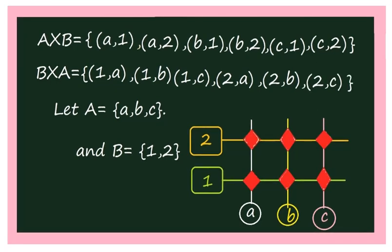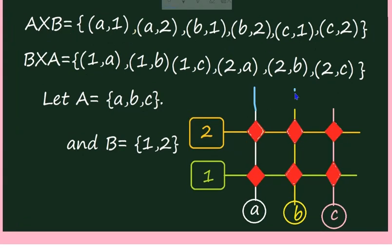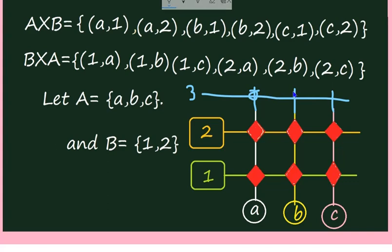This is B cross A. Suppose there is one more office, called office 3. Then we will have other junctions, and we can find the cross product. There will be 3 more elements: (a, 3), (b, 3), and (c, 3). In B cross A also there will be 3 more elements: (3, a), (3, b), and (3, c).